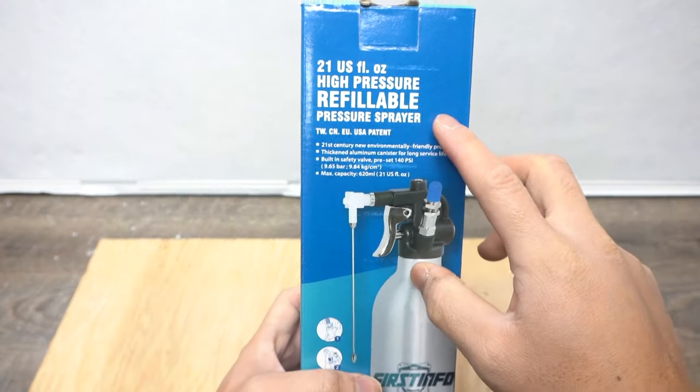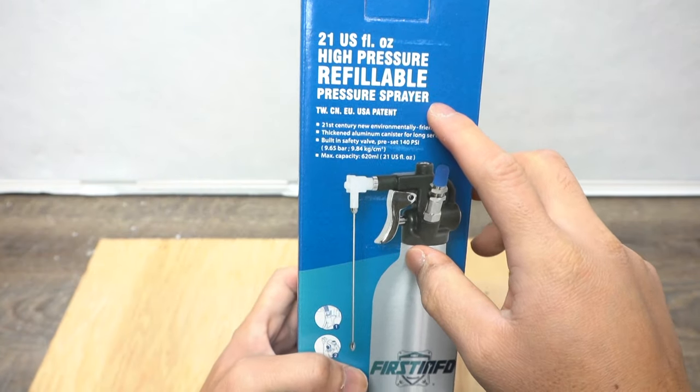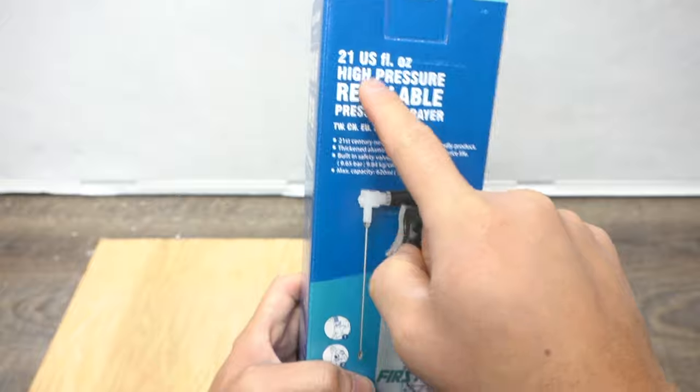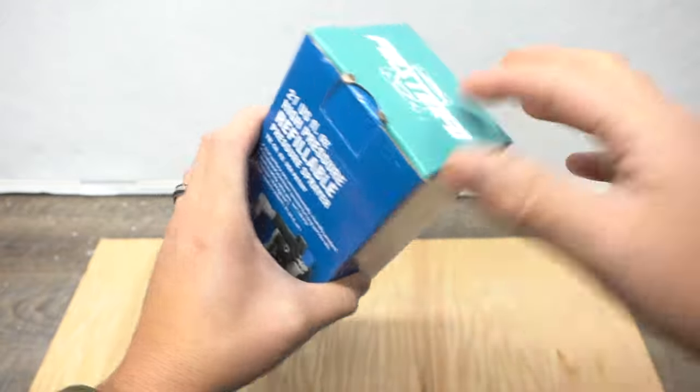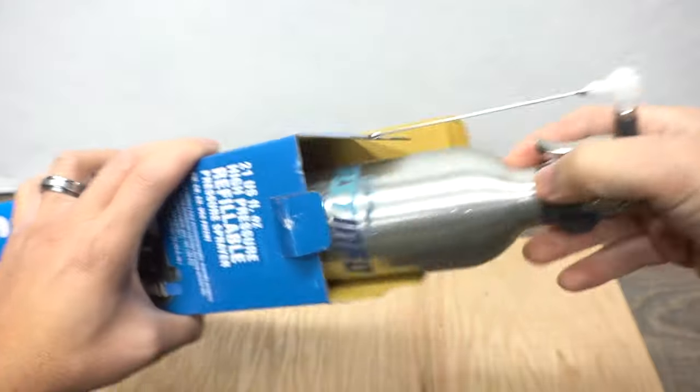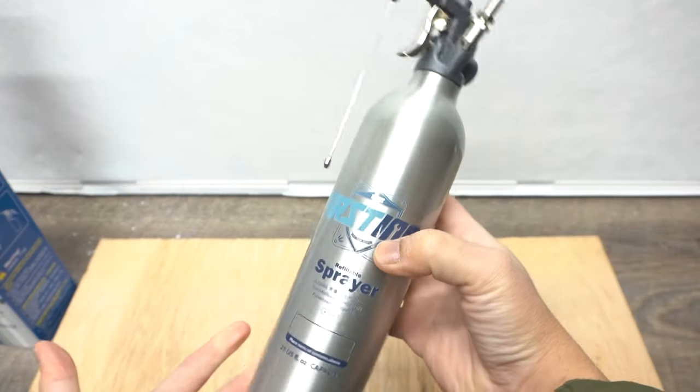Let me show you these products. And by the way, I'm not sponsored by any of these products. This first product I want to show you, this is the high pressure refillable pressure sprayer. Now there are a lot of sizes. This is my first info. Let's see what's inside the box. It looks like a water bottle, but it is a high pressure sprayer.